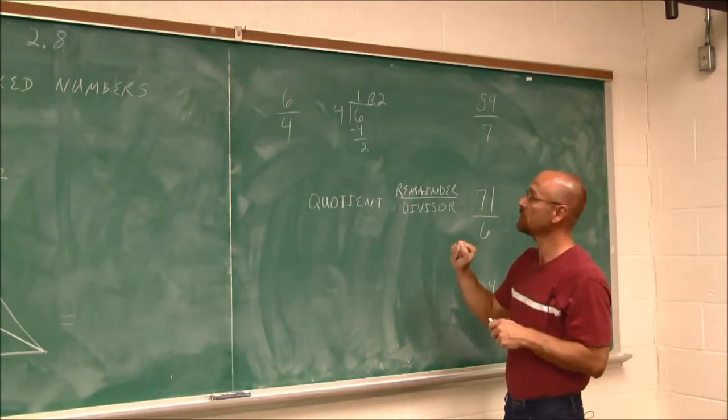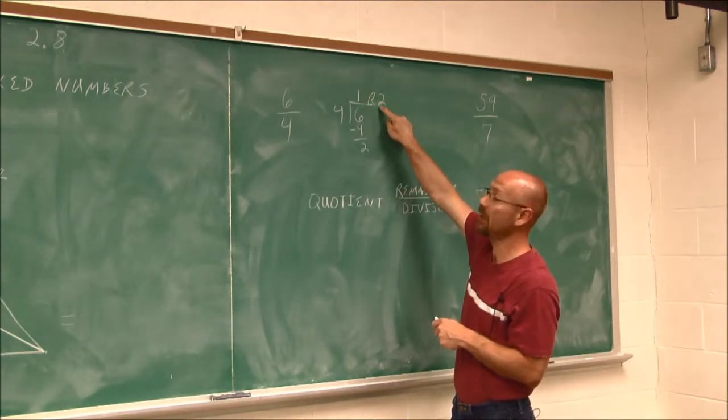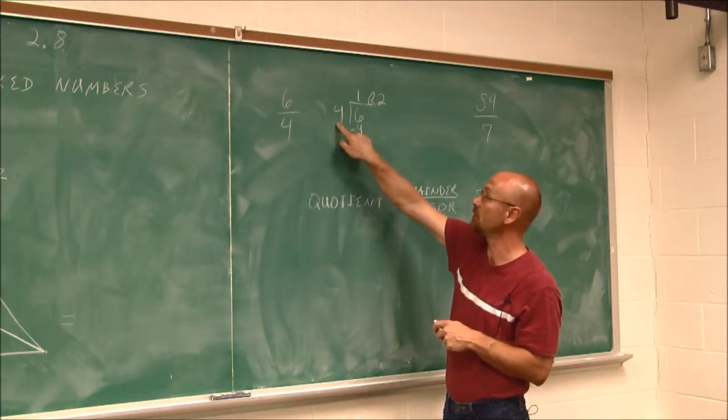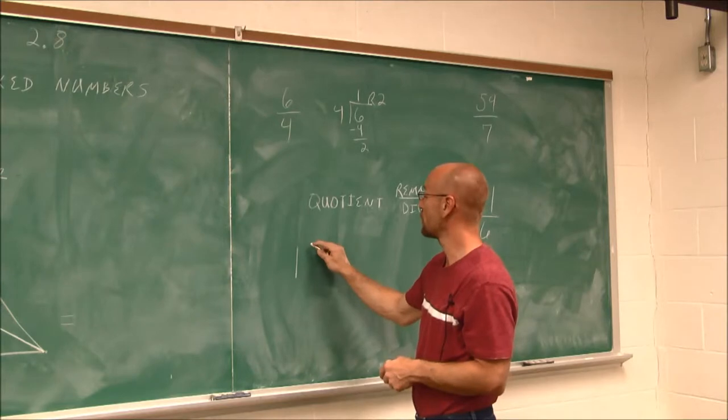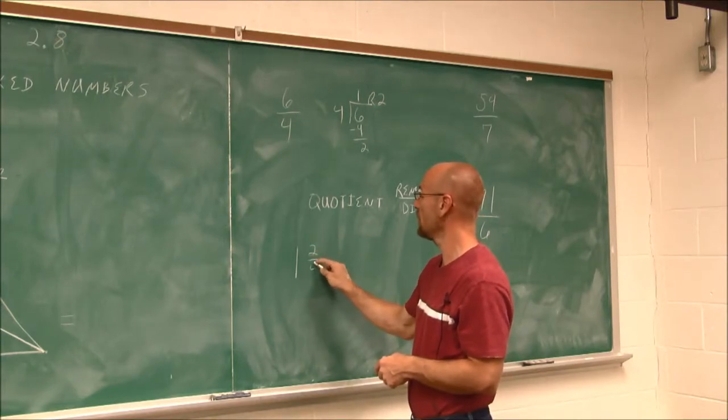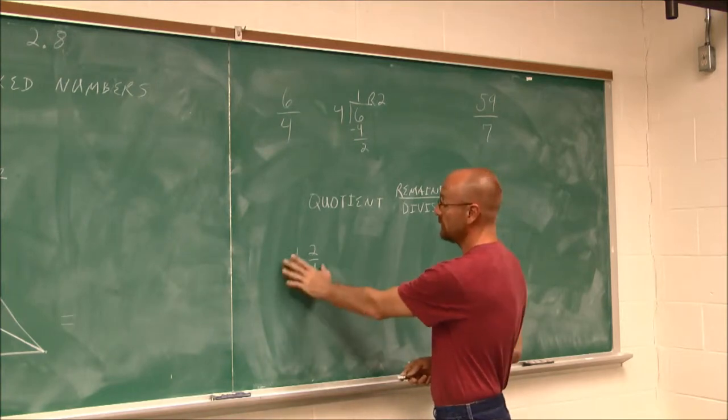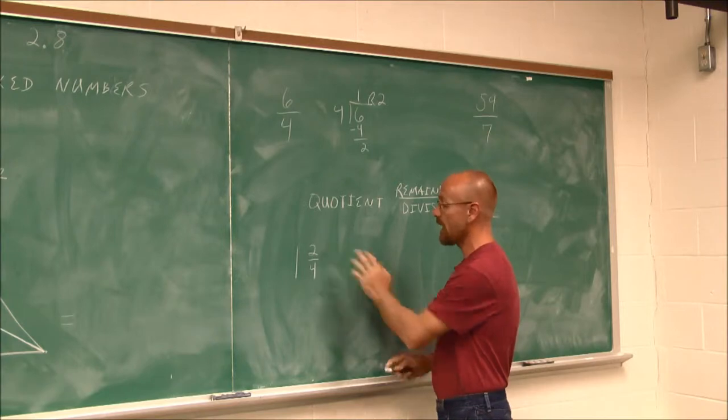Well, that's a little bit of terminology. Our quotient was 1. This is our quotient. And our remainder we put over our divisor. What we divided by is our divisor. So I can rewrite this to be 1 with a remainder of 2 over the divisor. So I have 1 and 2 fourths.